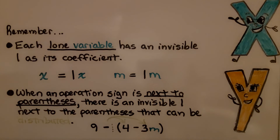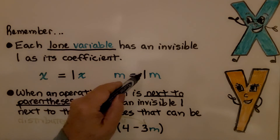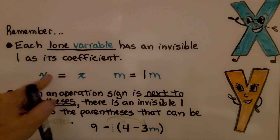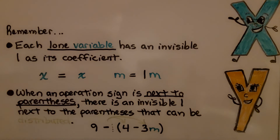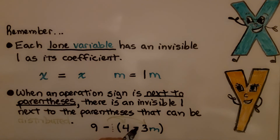Remember, each lone variable has an invisible 1 as its coefficient. If you see x all by itself, it's equal to 1x. If we see m all by itself, it's equal to 1m. We just don't write the 1 in front of it. When an operation sign is next to parentheses, there's an invisible 1 next to the parentheses that can be distributed. Like when we had 9 minus (4 minus 3m) in parentheses, there's actually an invisible 1 here that we can use to distribute: negative 1 times 4 and negative 1 times negative 3m.